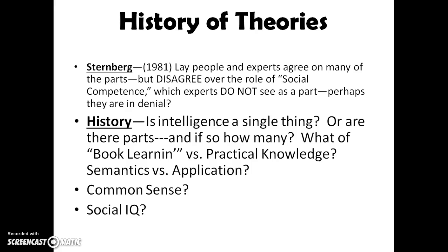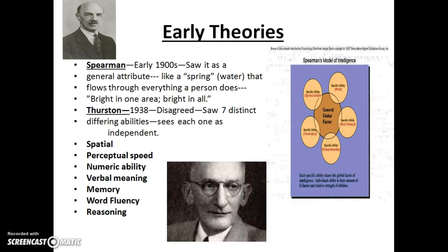Let's take a look at the history of the theories in psychology about intelligence. Is it a single thing? Are there parts, and if so, how many? What about book learning versus practical knowledge, semantics versus application, common sense, and social IQ? Our first theory, from the early 1900s, came from Spearman, who argued that intelligence was a general attribute that flowed like a spring throughout a person.